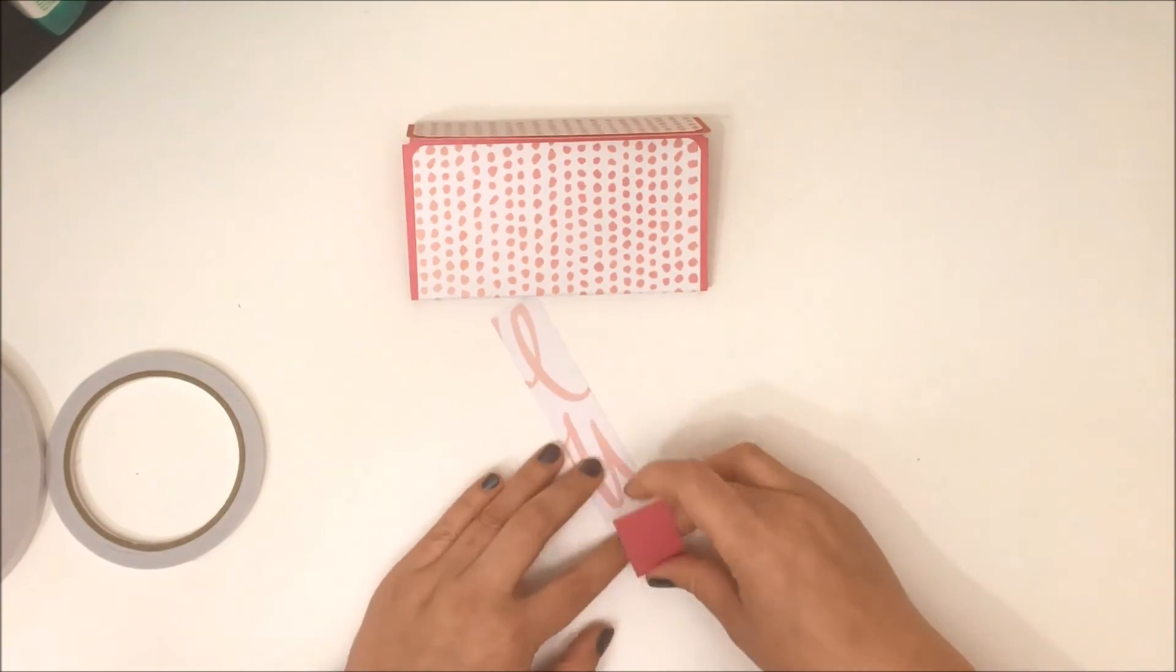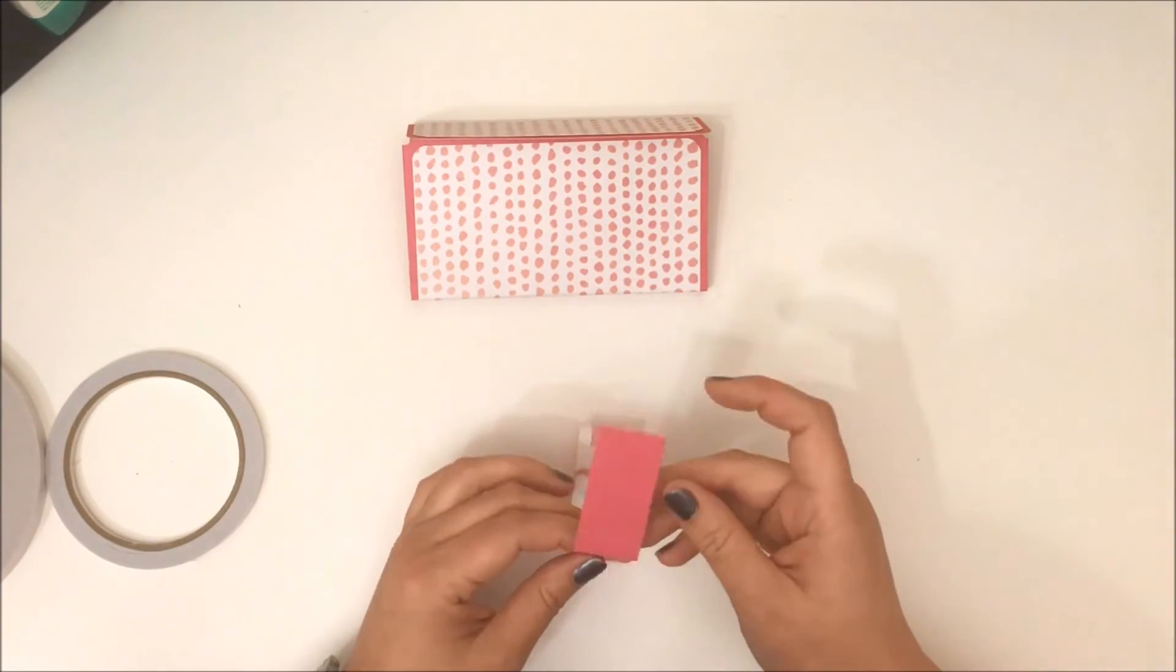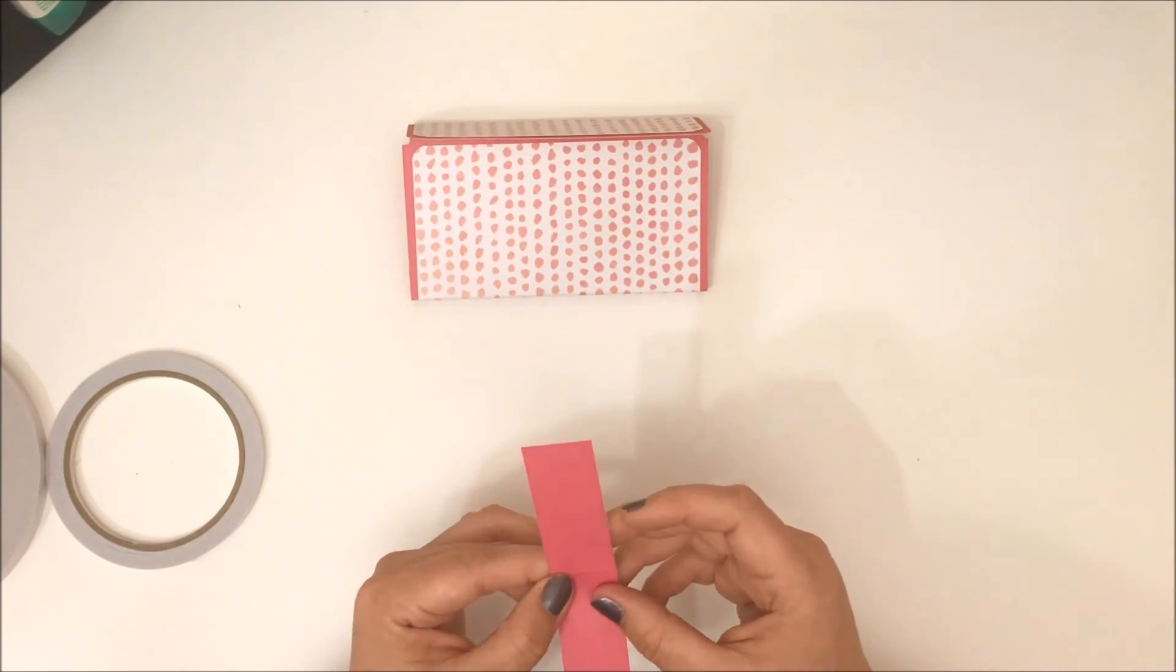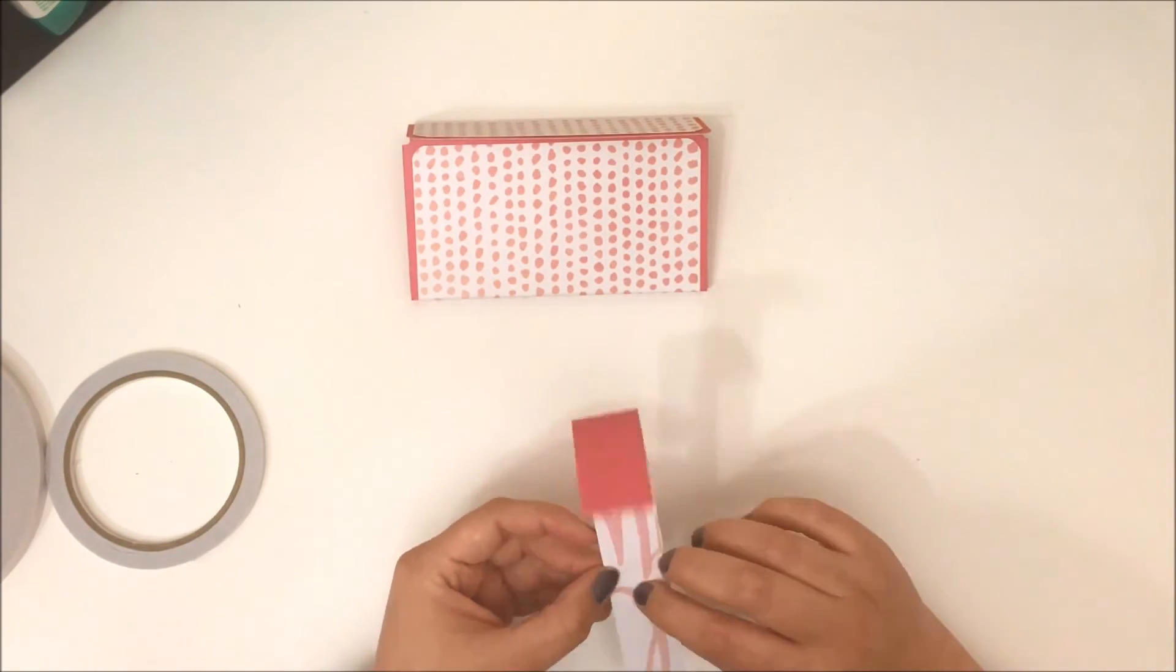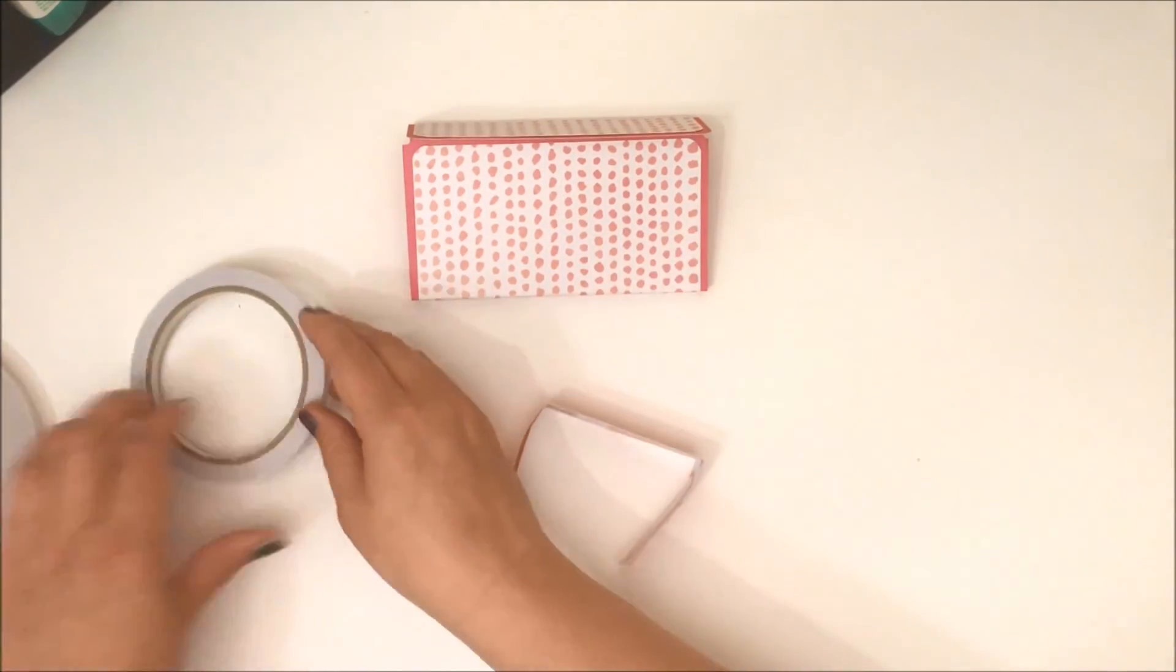So that's done. I'm putting my trimmer/scorer away and just folding along those score lines. Then just to make the belly band—I've just done a very basic design of this wallet.